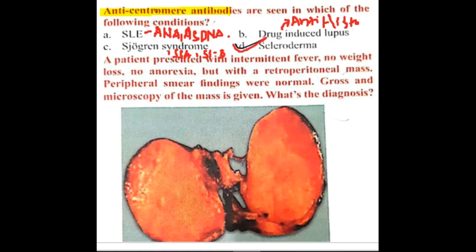Whereas if you see systemic sclerosis, that is DNA topoisomerase 1. That is one important thing which you should remember.